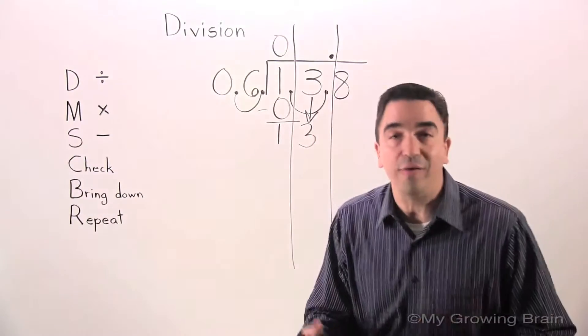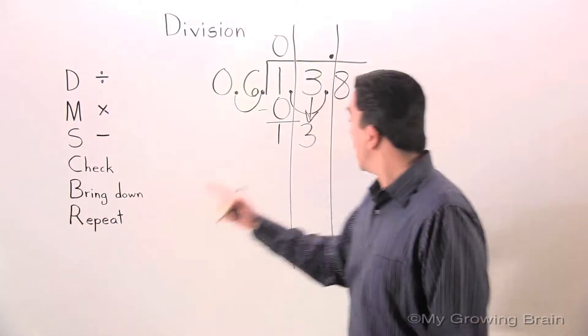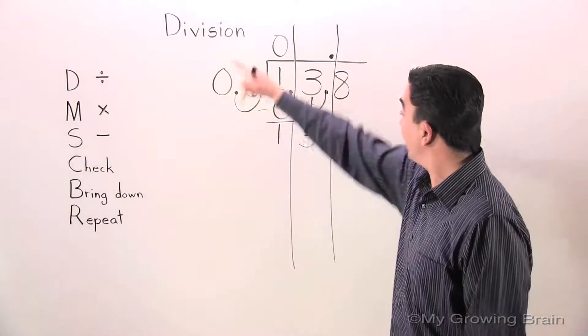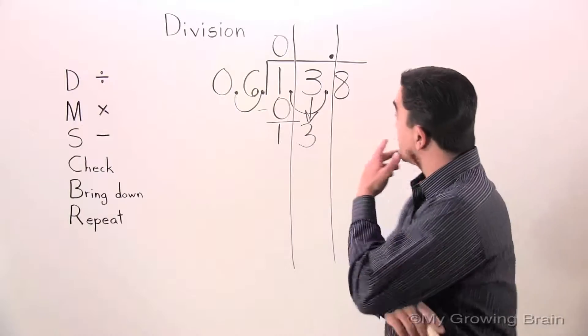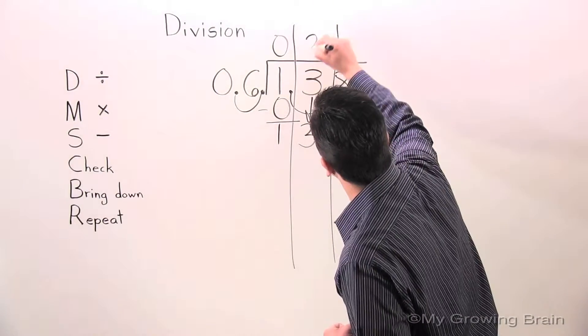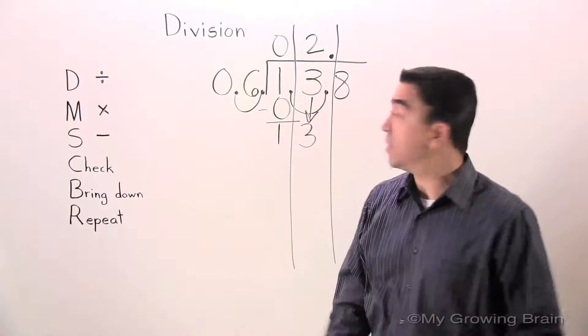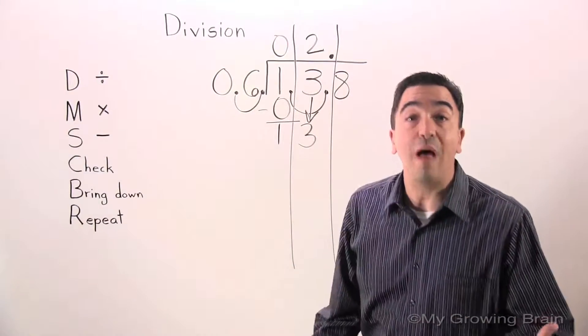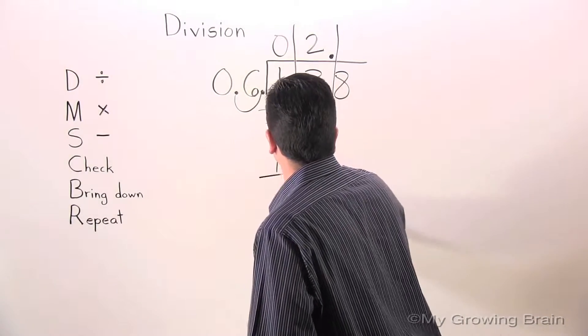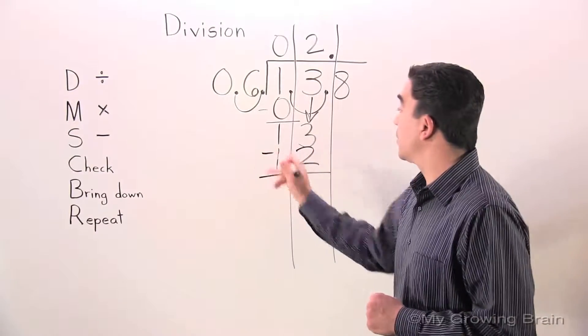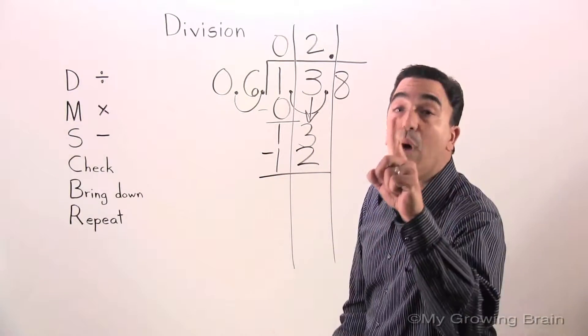Repeat the whole process. Back to the top. 13 divided by six, or six into 13. Two times. Next step, multiply: six times two, twelve. Next step, subtract: 13 minus 12, one.